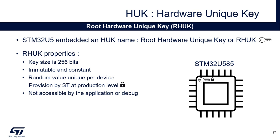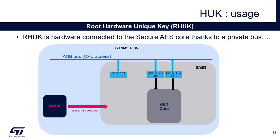So the question now is: how can we use it? The root hardware unique key is hardware-connected to the Secure IOS IP thanks to a physical private bus. The Secure IOS is an IOS hardware accelerator with countermeasures against side channel attacks. We have one root hardware unique key per device, and the Secure IOS will never use this key directly to encrypt and decrypt data.